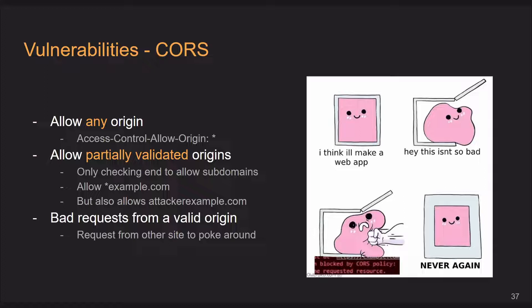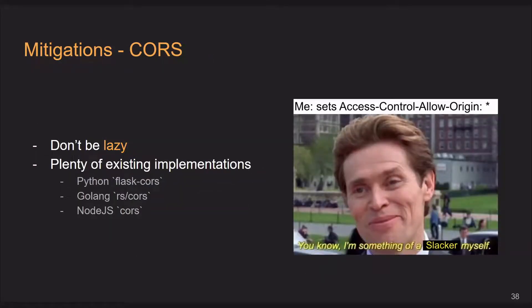Also bad requests from a valid origin — if you can find a way via cross-site scripting to start sending malicious requests from a valid origin, whether it be partially validated or if they allow all, then GG. If you want to do it smart, just enter in all your subdomains, restrict it properly, and spend some time to read up on it. It's a really good security feature — don't sleep on it. There are lots of packages that make this very easy: Python has flask-cors, Golang has rs/cors, Node.js just has cors. Just use them.